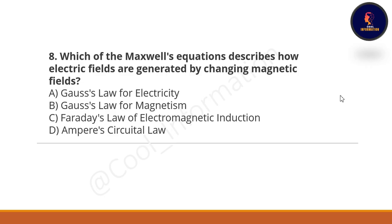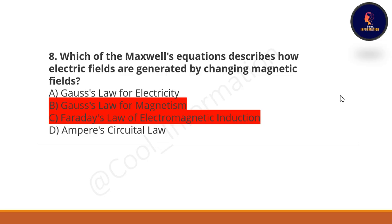Eighth question: which of Maxwell's equations describes how electric fields are generated by changing magnetic fields? Option A: Gauss's law of electricity. Option B: Gauss's law of magnetism. Option C: Faraday's law of electromagnetic induction. Option D: Ampere's circuital law. The correct option is C — Faraday's law of electromagnetic induction.